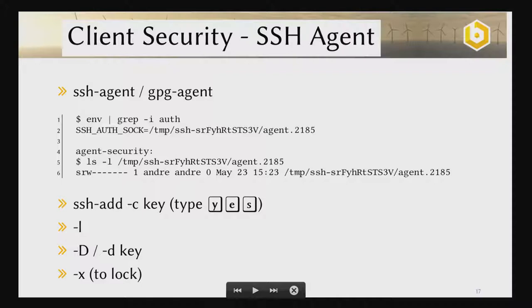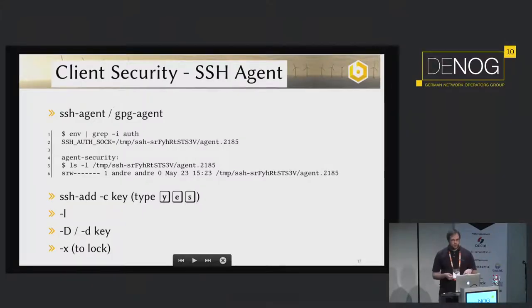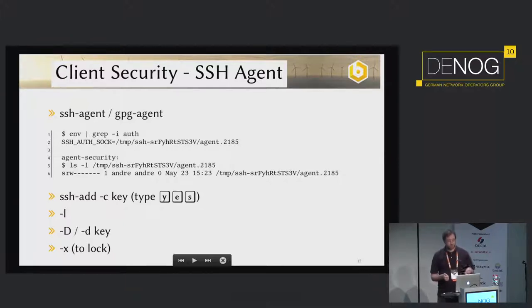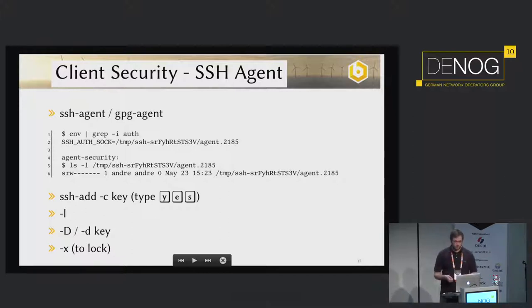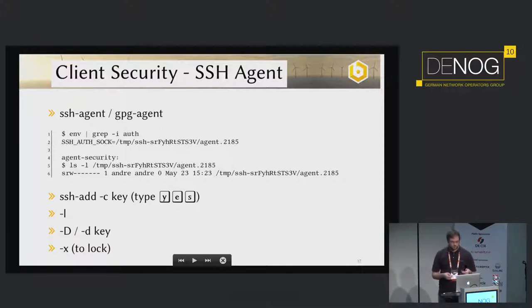How does the SSH agent work? You load your key in. If you have a jump host with a shared user that you share with other colleagues, you should know that the agent relies on Unix file permissions. So if you share a user and the agent is running, everybody with the same user can use your agent session and your local keys. What can you do? When you add the key with ssh-add, you can use the minus C flag, and then you have to type yes every time the key is used. You can list keys, delete all keys, delete one key, and you can lock your SSH agent when you go for a coffee break.